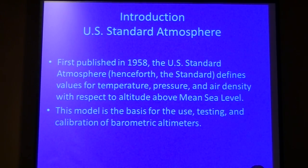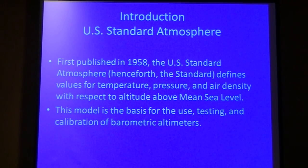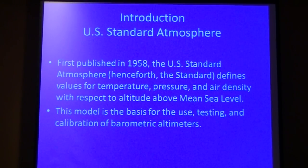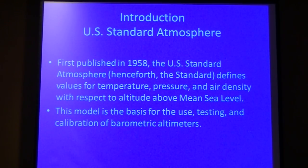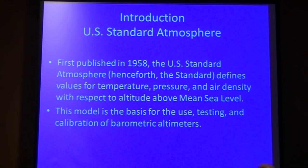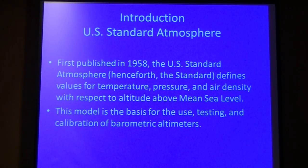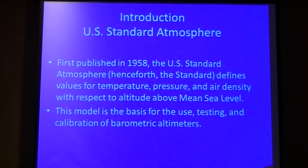Most altimeters translate changes in pressure to an altitude based on a standard. That standard used in this country is called the U.S. Standard Atmosphere, first published in 1958, with several iterations through 1976. The standard defines values for temperature, pressure, and air density with respect to altitude above sea level, and most of the standard is just table after table of data.